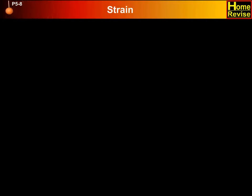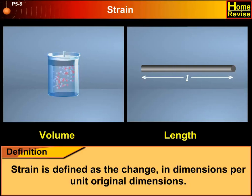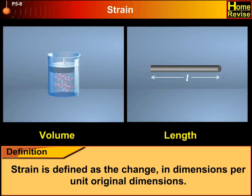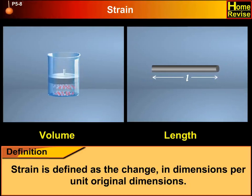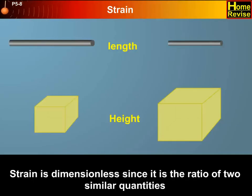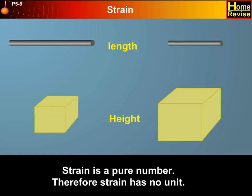Strain is defined as the change in dimensions per unit original dimensions. Strain is dimensionless since it is the ratio of two similar quantities. Strain is a pure number. Therefore, strain has no unit.